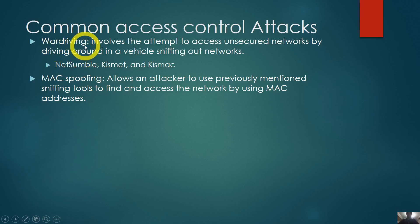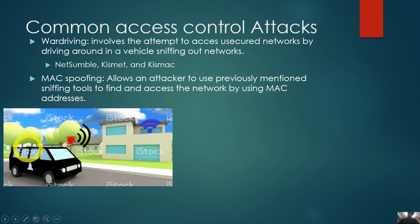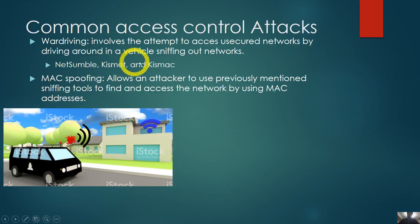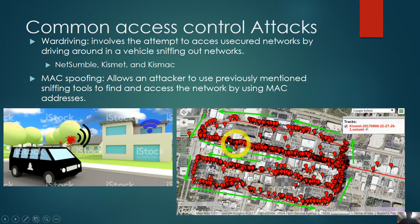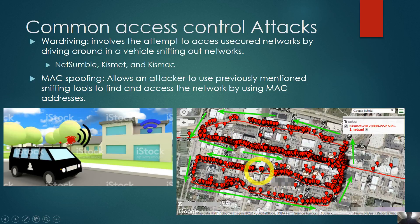War driving involves the attempt to access secure networks by driving around in a vehicle sniffing out networks. Imagine a person just driving around the neighborhood, collecting the names of networks and their access control information. There are specific tools like Kismet and Gismark that you can download and do the same with your car.